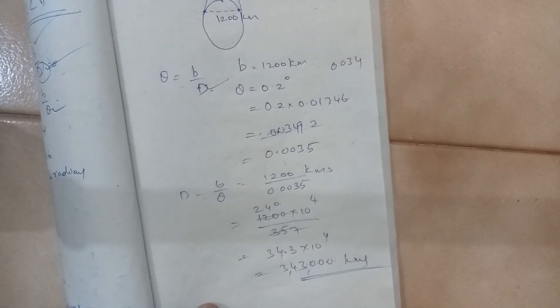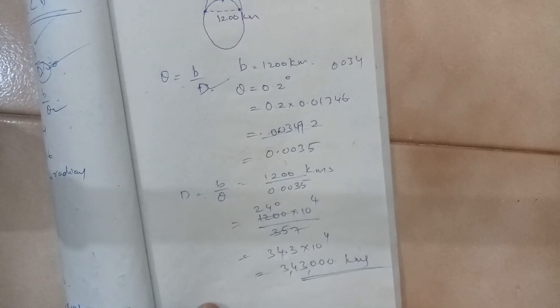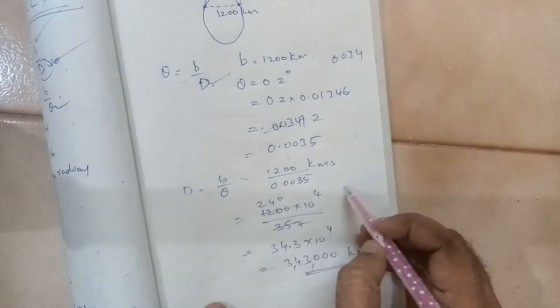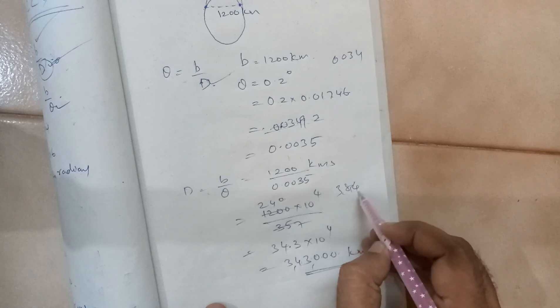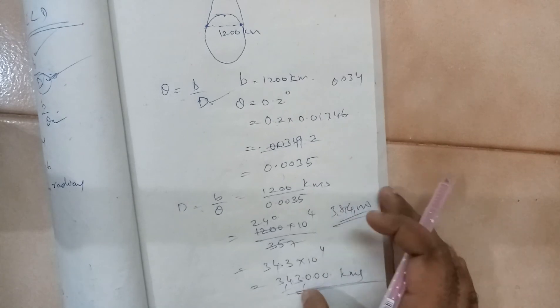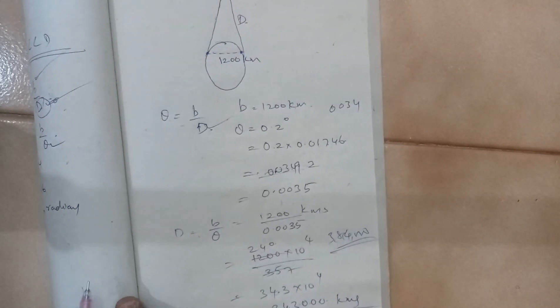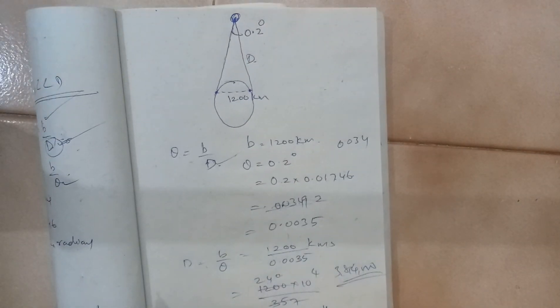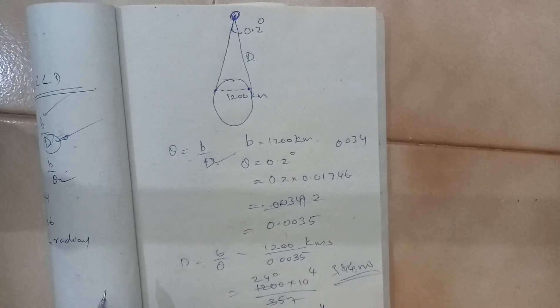So this is how you can calculate, we can find the distance between moon and Earth approximately. Actual distance is 384,000 km approximately. So we are getting pretty close, although there is a big gap. But we are trying to explain a problem how this method can be applied.